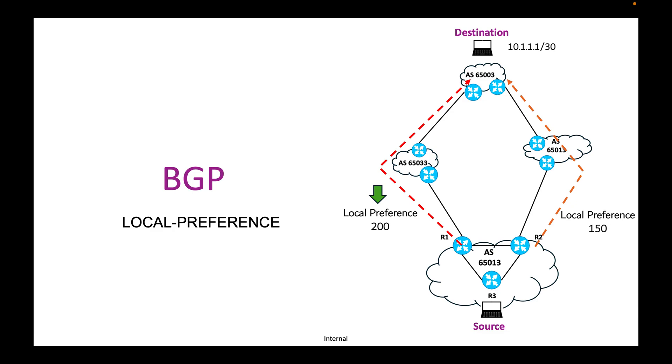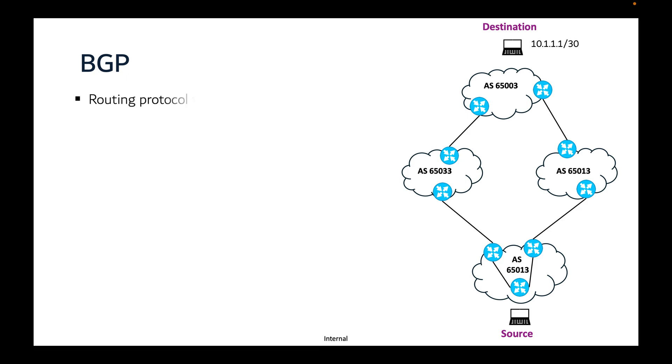Hello and welcome to my channel, Networking with Edge. In this session, I will discuss BGP local preference. As you know, BGP is the routing protocol for the internet, used to exchange routing information between different autonomous systems on the internet.